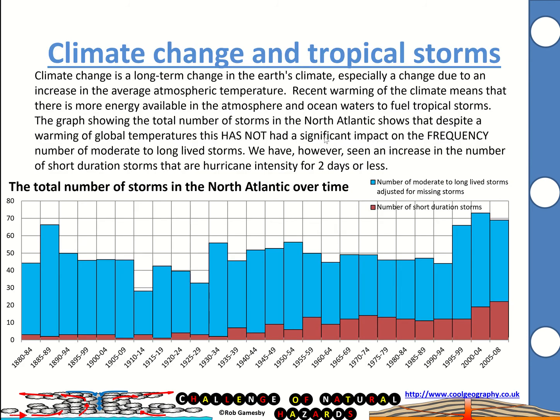In terms of tropical storms and those features, recent warming of the climate means there's more energy available in the atmosphere and in our oceans to fuel tropical storms. Remember, one of the conditions for tropical storms to form is that seawater needs to be at least 27 degrees Celsius and to a sufficient depth of around 60 metres for those storms to actually have the energy they need to be created.